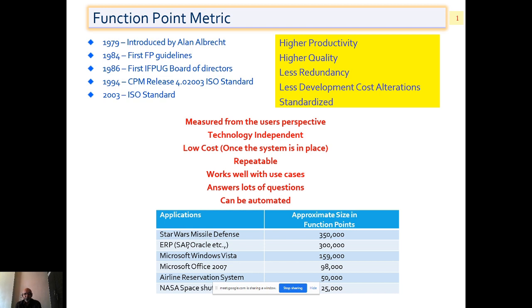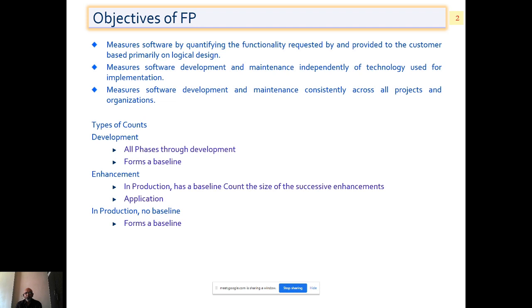Now the applications which were surveyed: Star Wars missile defense had 350,000 function points, Microsoft Windows and SAP had 300,000, Microsoft Windows Vista had 160,000, and airline reservation had 50,000. If you consider WhatsApp, it's in the range of 10,000. If you think about YouTube, that is in the range of 20,000. So we consider them to be great software, but the functionalities that are addressed by them are very limited.